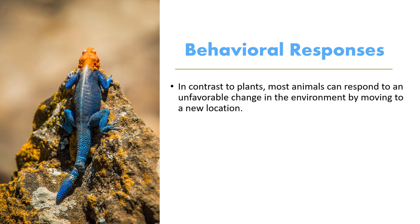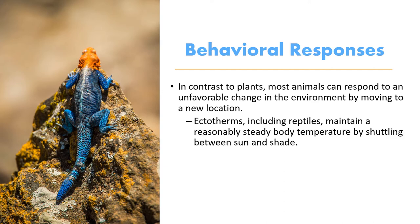Animals have more behavioral responses available than plants, which can't pick up and leave. Ectotherms shuttle between sun and shade — lizards bask in sunny areas and run to shade when threatened, using behavior to maintain a steady body temperature. Birds will travel great distances rather than changing their feather type — a behavioral rather than anatomical response. In humans, we have a huge range of behavioral responses: putting on a jacket, turning on the heater, starting a fire, drinking warm drinks when cold; using air conditioning or swimming when hot.